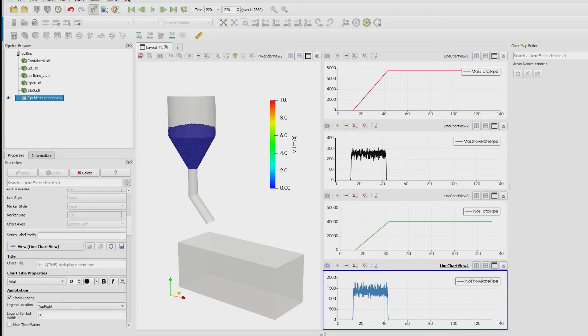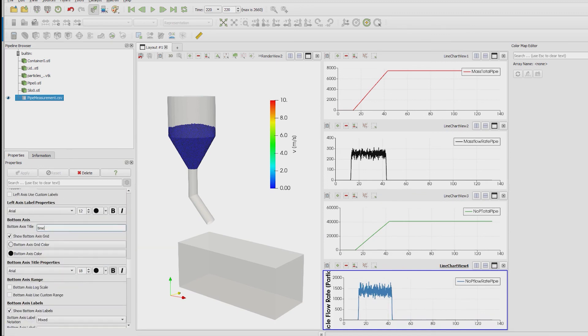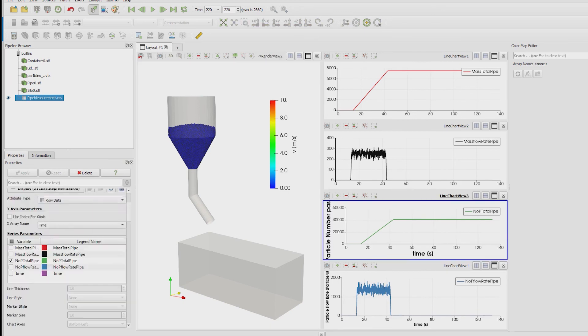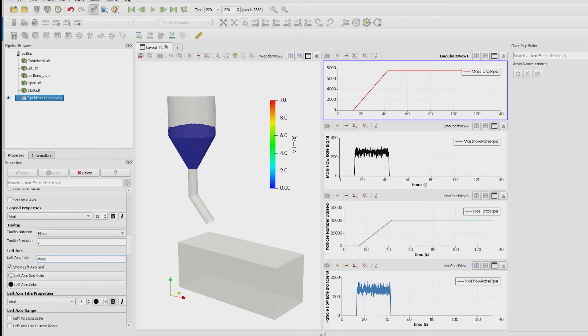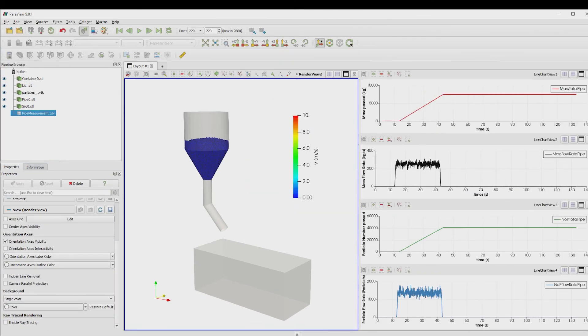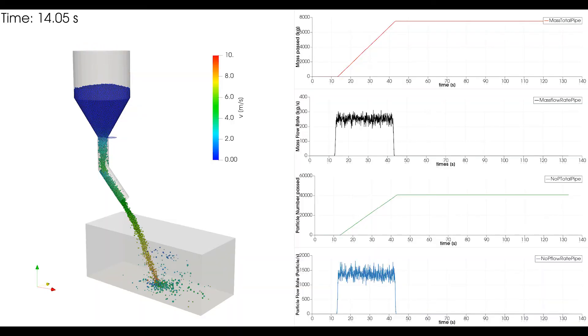In the last step we change the names of the axes of each diagram to the corresponding values like mass and time. Now our post processing is finished and we can run the video.